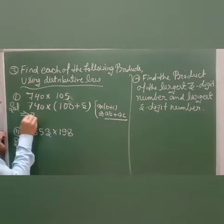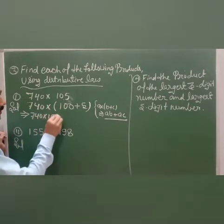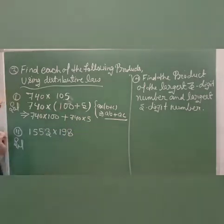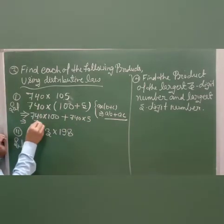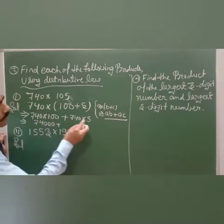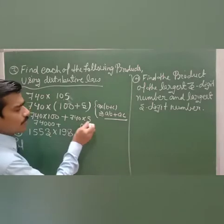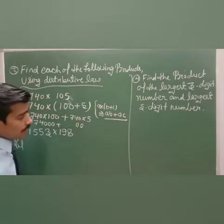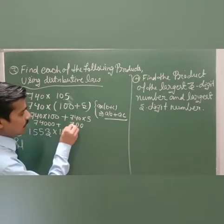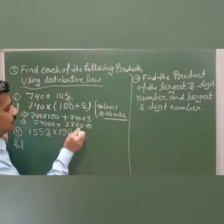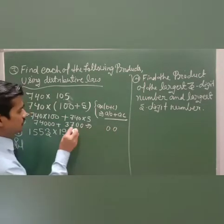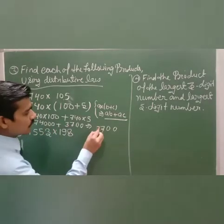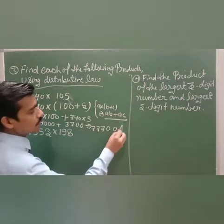Applying the distributive law: 740 into 100 gives 74,000, and 740 into 5 gives 3,700. Adding these together: 74,000 plus 3,700 equals 77,700. That is your answer.